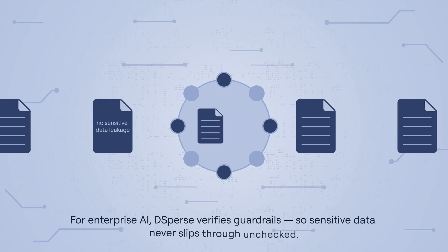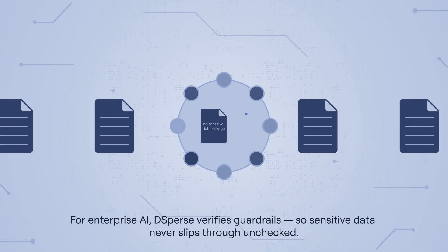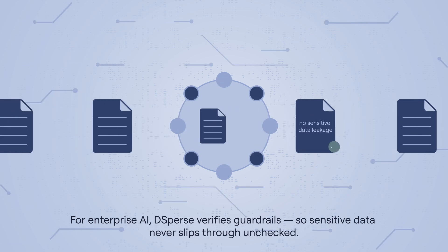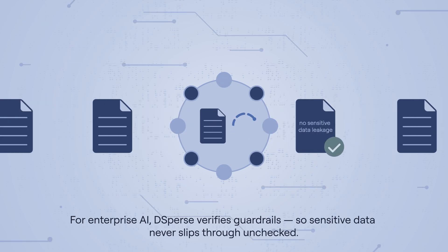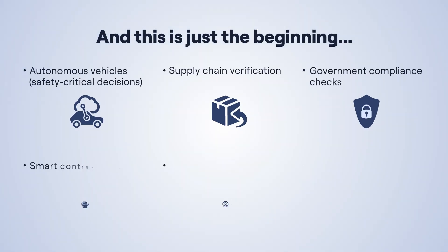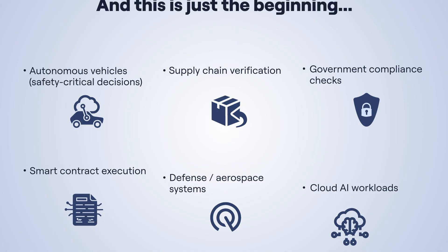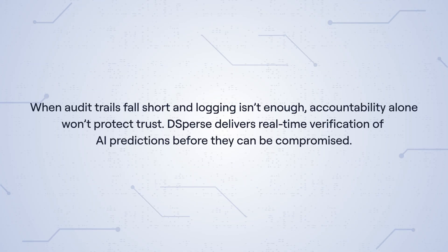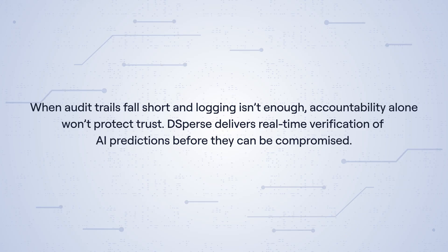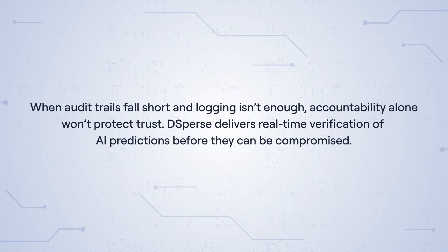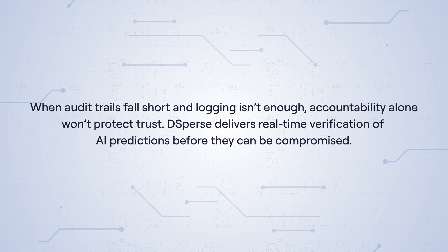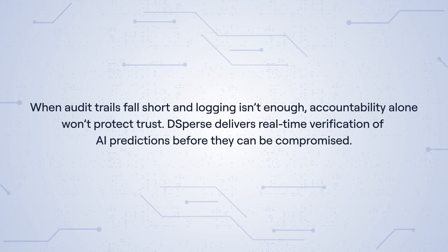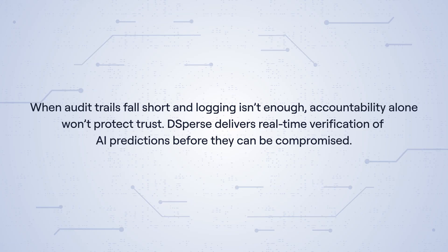For enterprise AI, D-Sperse verifies guardrails so sensitive data never slips through unchecked. And this is just the beginning. When audit trails fall short and logging isn't enough, accountability alone won't protect trust. D-Sperse delivers real-time verification of AI predictions before they can be compromised.